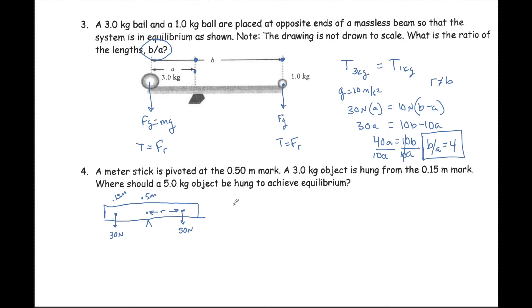This is equilibrium, so the torque of the 3 kilogram equals the torque of the 5 kilogram. I have 30 newtons times R. But this is not R, it's 0.5 to 0.15, so my R is 0.35 meters. That equals 50 newtons times X. X equals 0.21 meters.